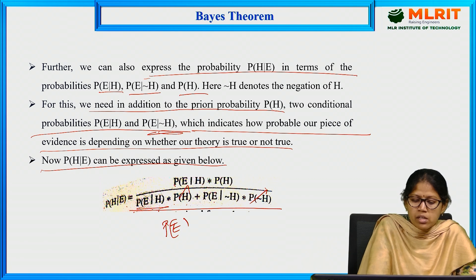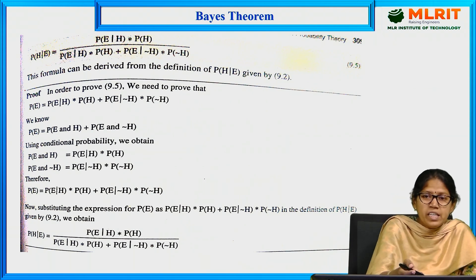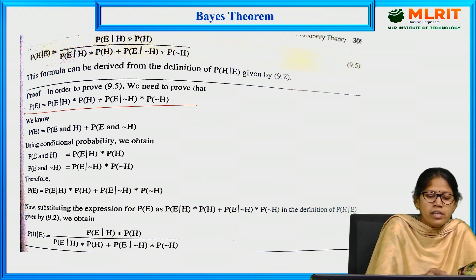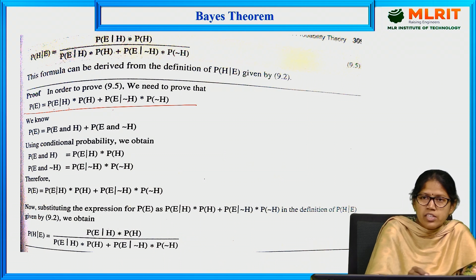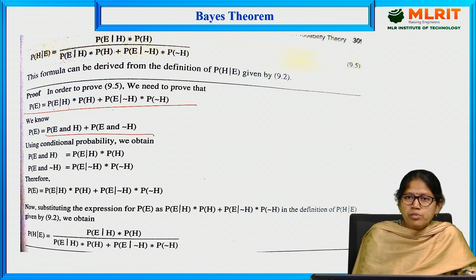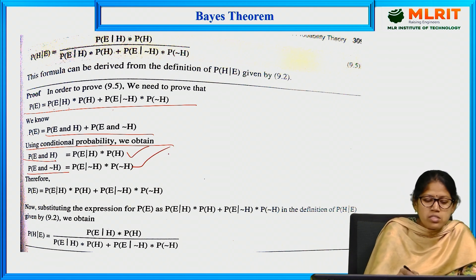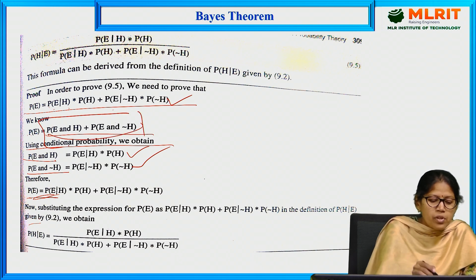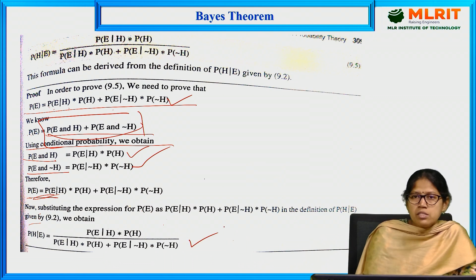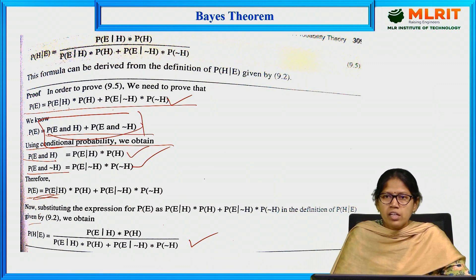We can express this as: probability of H given E equals probability of E given H into probability of H, divided by probability of E given H into probability of H plus probability of E given negation H into probability of negation H. We know that probability of E equals probability of E and H plus probability of E and negation H. Substituting this, we get the full expanded formula: probability of H given E equals probability of E given H into probability of H, divided by probability of E given H into probability of H plus probability of E given negation H into probability of negation H.